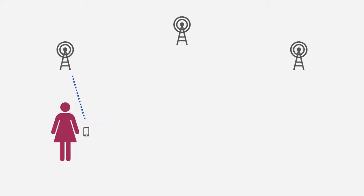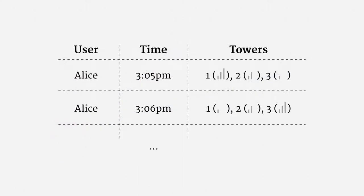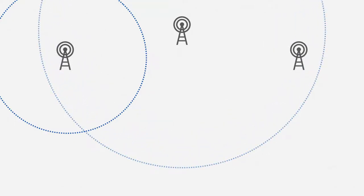In fact, cell phones connect to multiple towers at the same time — that's how your phone keeps a call connected even though you're moving. So instead of recording just a single tower, a phone company often records a set of towers and associated signal strengths. From this data, it's easy to see that Alice moved from near tower 1 on the left to near tower 3 on the right. There's a set of signal strengths as observed at multiple towers, which is enough information to triangulate the position of a phone. Triangulation provides a much more precise location estimate than just being near a particular tower.